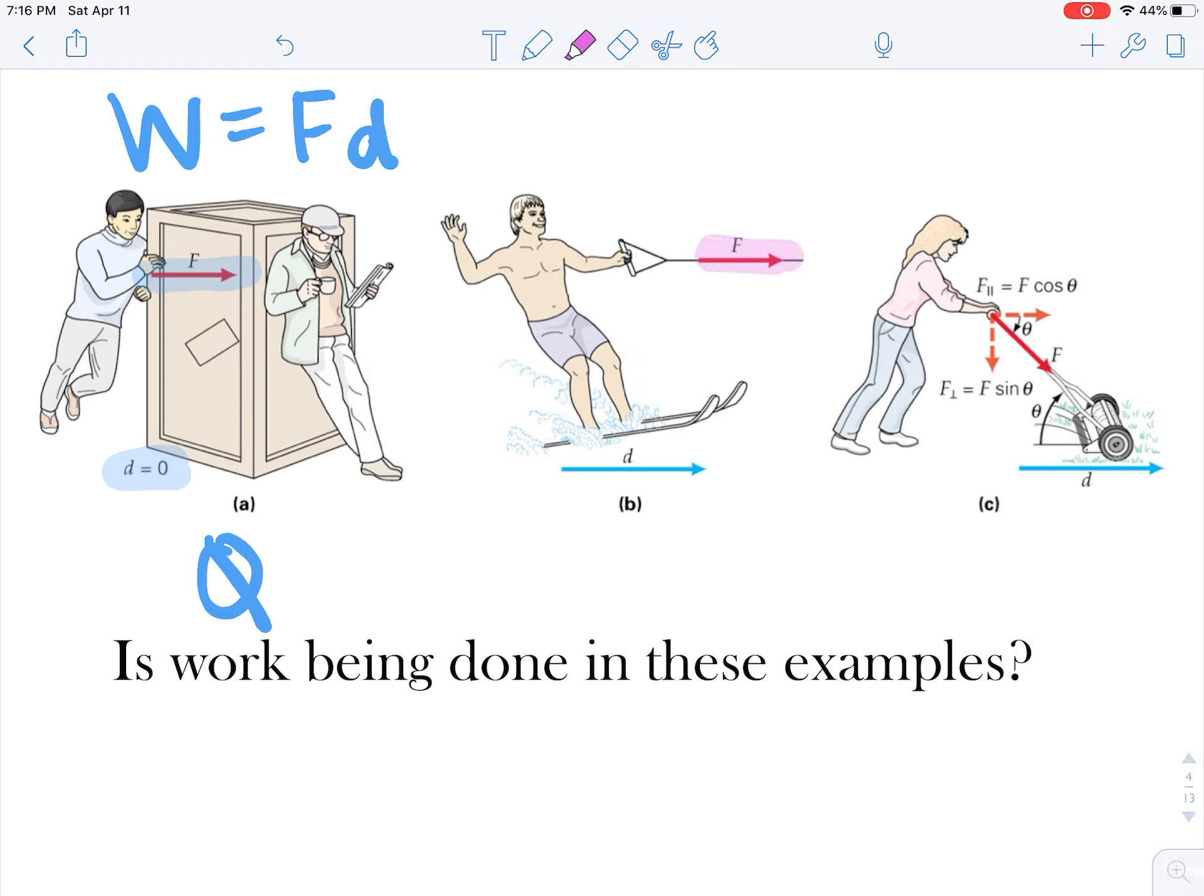In this next example we have a force pulling this water skier to the right and he is moving to the right. Since this force is causing the change experienced by the water skier I would say that that applied force or that tension force, whatever you want to call it, is doing work and I would say it's doing positive work because there is a gain in energy.